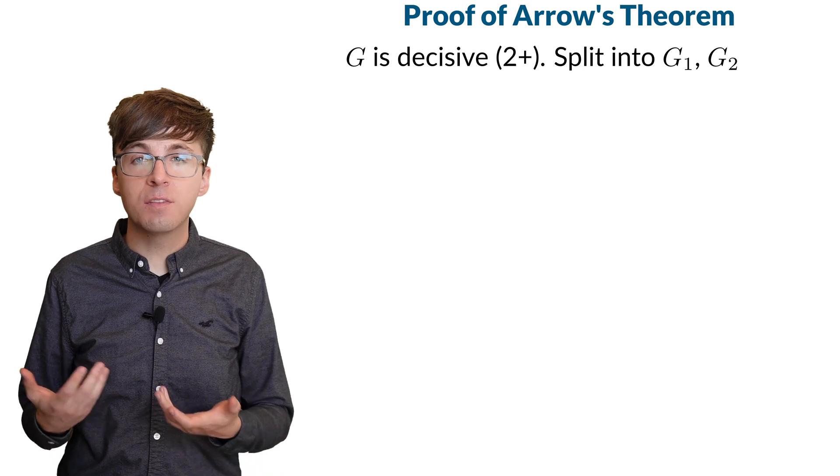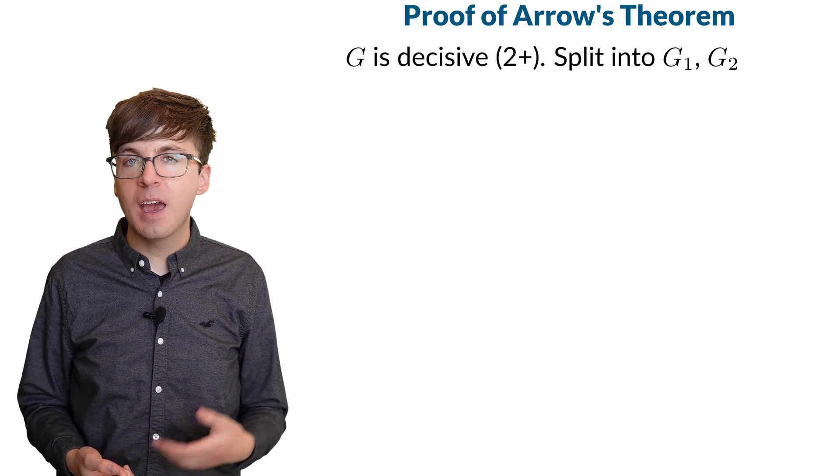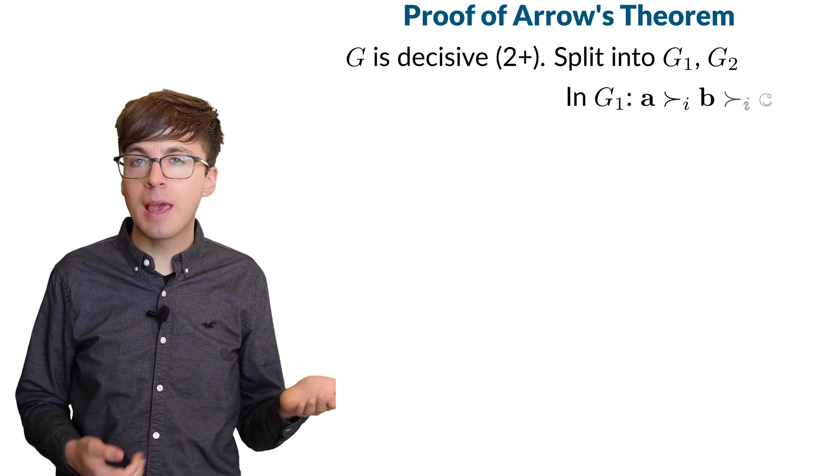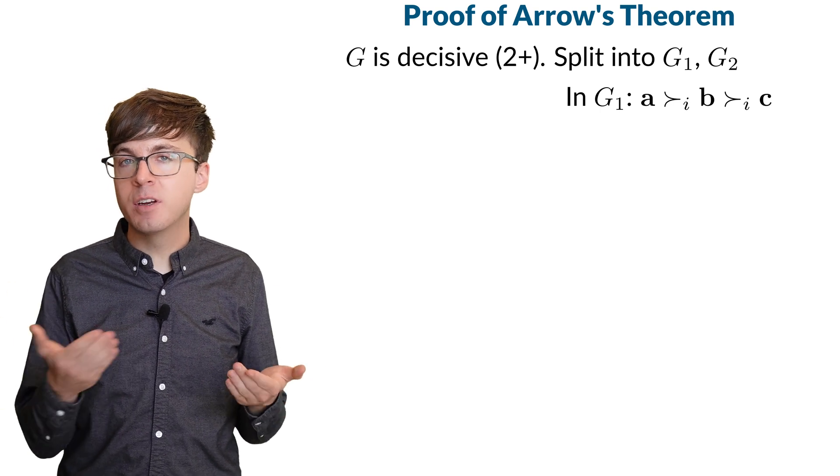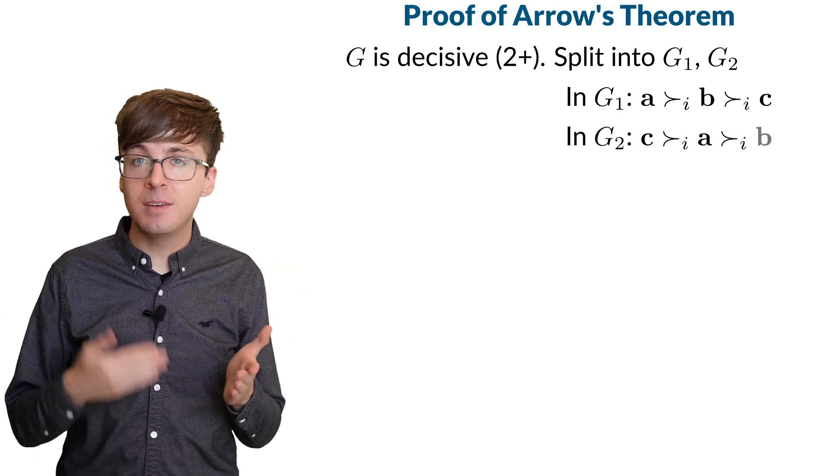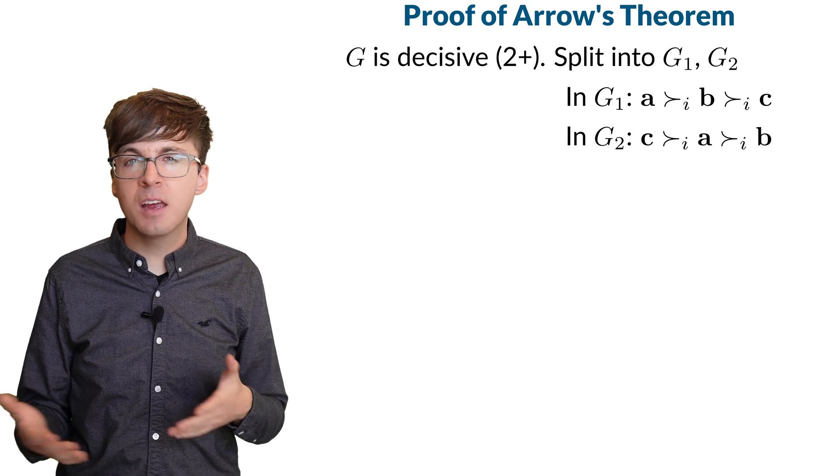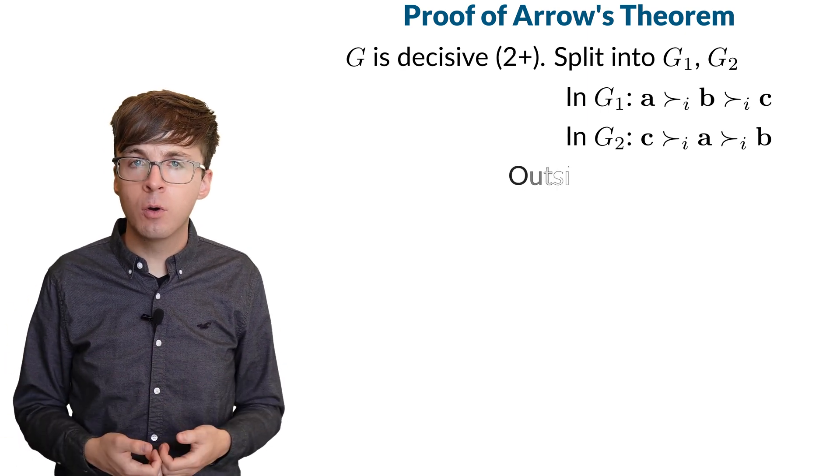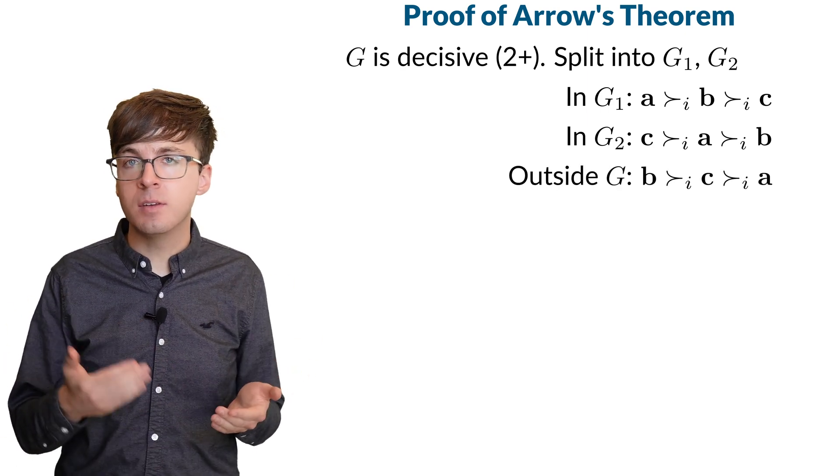Now consider what happens if everyone votes this way. Everyone in G1 ranks A, B, C. Everyone in G2 ranks C, A, B. And those who were not in the original coalition rank B, C, A.